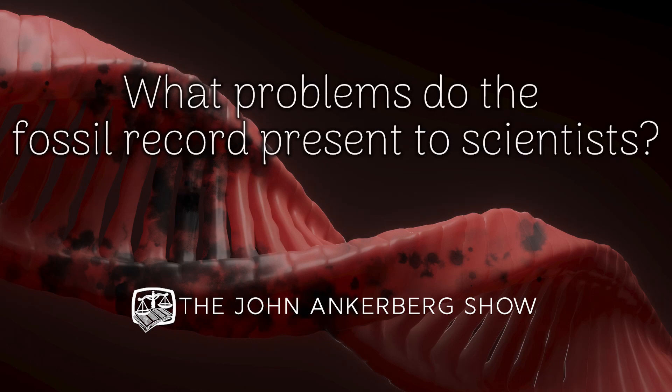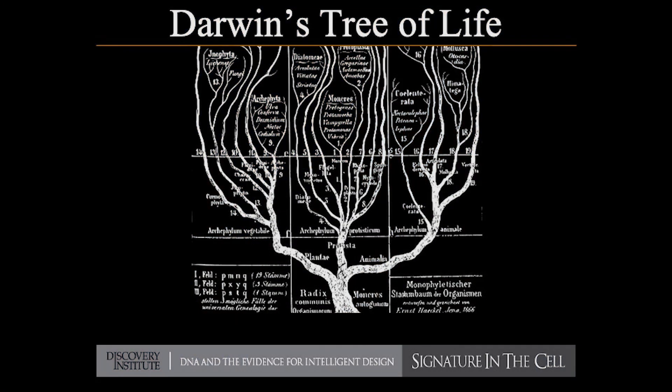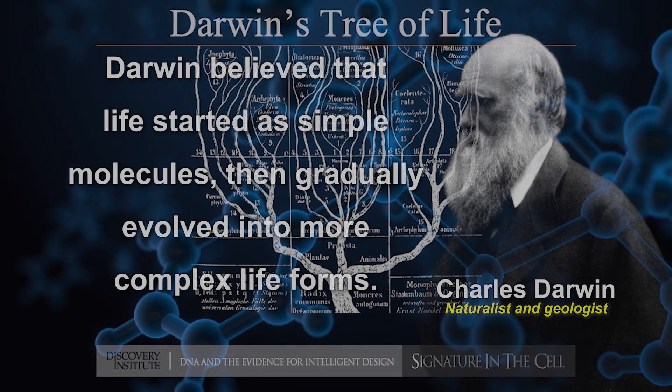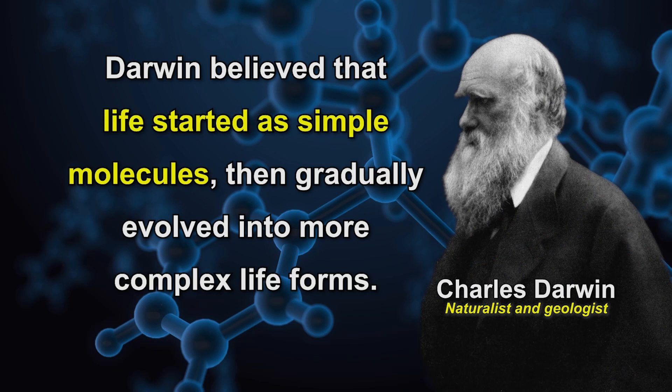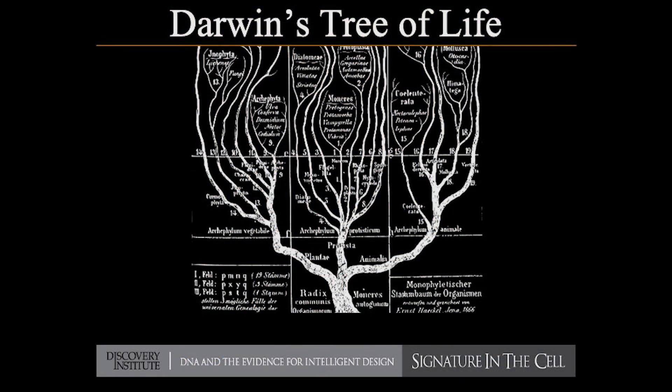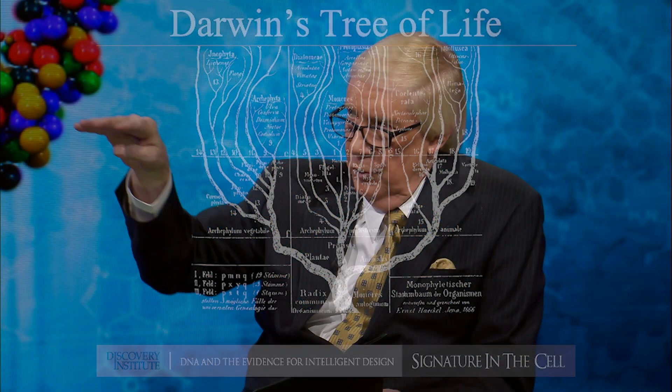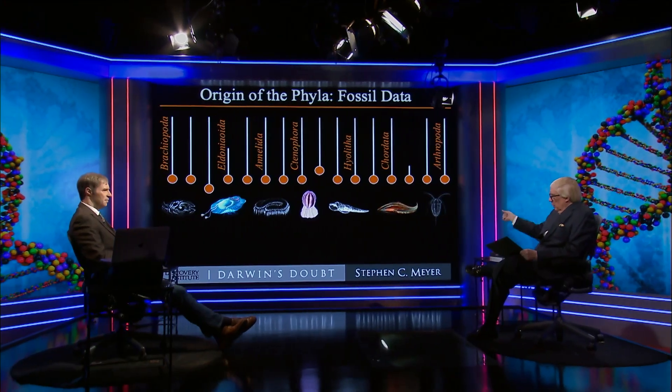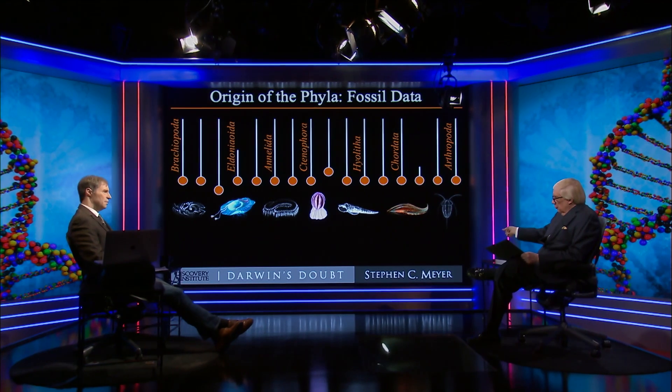Paleontologists saw all these animals, but if you're thinking about Darwin's tree of life, he was saying you've got simple molecules and then a gradual evolution going up. He had the tree where all the branches went, but you had the precursors in front. These guys all showed up in an explosion — that's why you call it the Cambrian explosion.